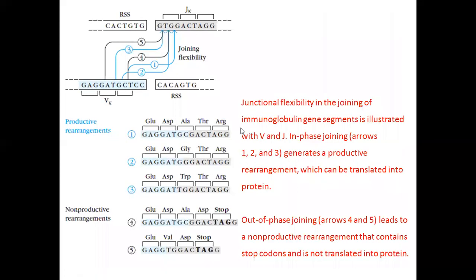This in-phase and out-of-phase joining is also known as junctional flexibility — junctional flexibility in the joining of immunoglobulin gene segments. So V and J segments, with rows 1, 2, and 3 aligning in-phase, generate a productive rearrangement which can be translated into protein.